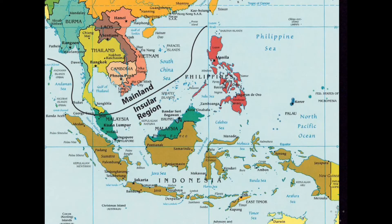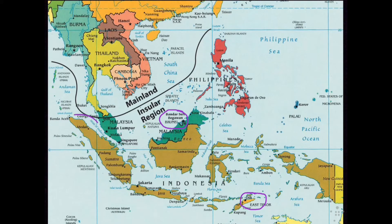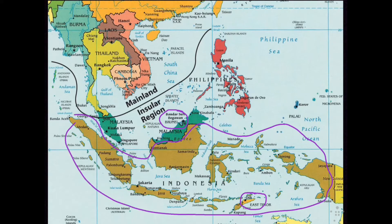The insular or island countries of Southeast Asia include Brunei, East Timor, Indonesia — shown in this brown color — Singapore, which is a little country shown here, and the Philippines, which are in red in the top right corner. These are all your insular countries of Southeast Asia.